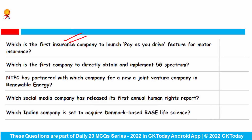Which is the first insurance company to launch the pay-as-you-drive feature for motor insurance? This is GoDigit General Insurance, which launched a pay-as-you-drive add-on feature for Motor Insurance Own Damage Policies. Customers who drive less will pay less. GoDigit will use odometer reading, telematics data, and annual kilometer data to provide discounts.